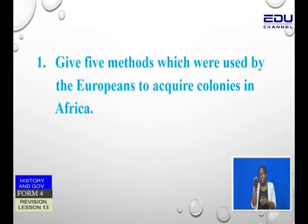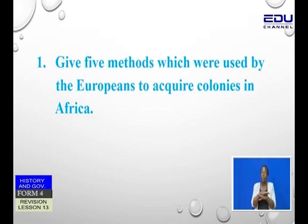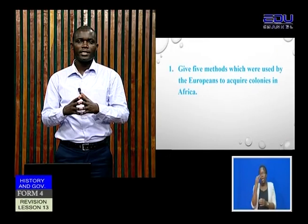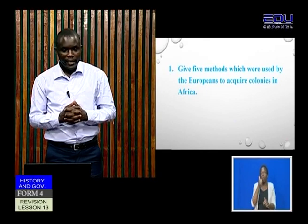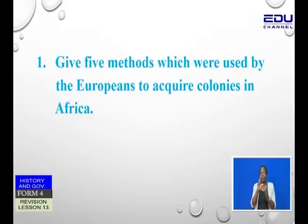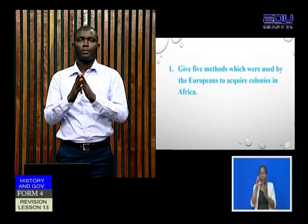For example, the first key term that you need to underline is the word 'give.' Then again, you will underline the word '5.' It will tell you that the question is closed — we are talking of a closed-ended question. The examiner only wants 5 responses; if you provide more than that, it will be ignored. Then again, the next word that you need to underline is 'Europeans,' and finally 'colonies.' So if you fully understand those key words, I believe you will provide the required correct responses.